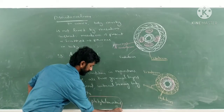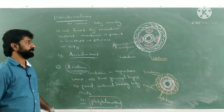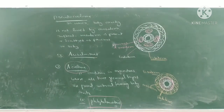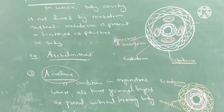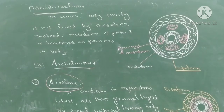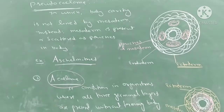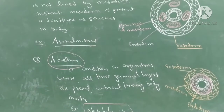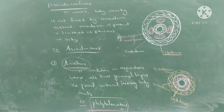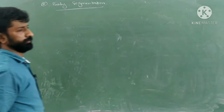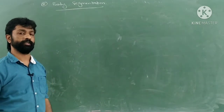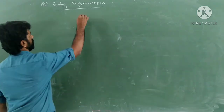A very good example of acoelomates is Platyhelminthes. Now, among the basis of classification, we are left with only two terms: body segmentation, and the presence or absence of notochord. Let us discuss segmentation.